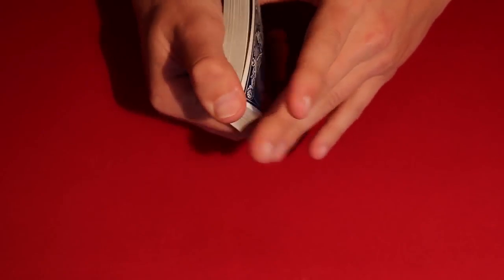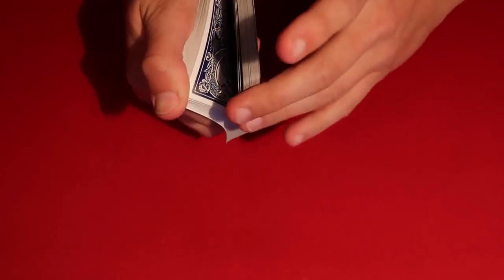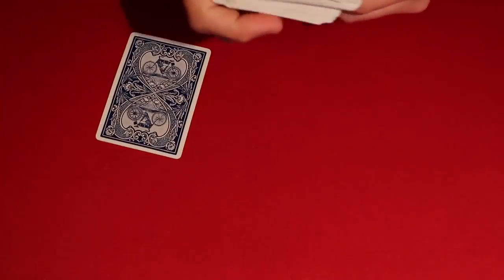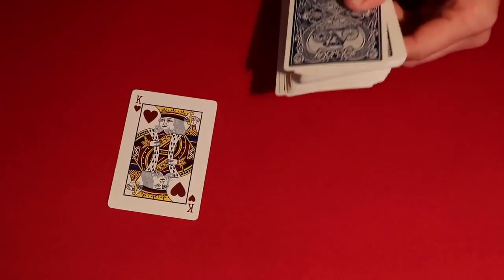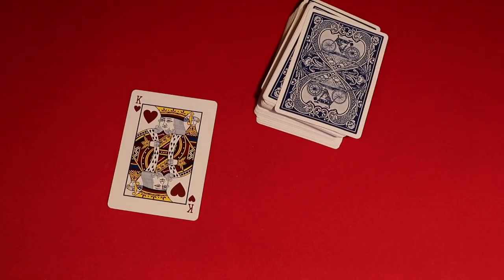So you go ahead and you say, all right, go ahead and tell me when to stop for another time. Let's say the spectator goes through, they say stop right around here. You take the card out, and this should be the spectator's chosen card. That is the trick, and then I'll show you guys how to do it.